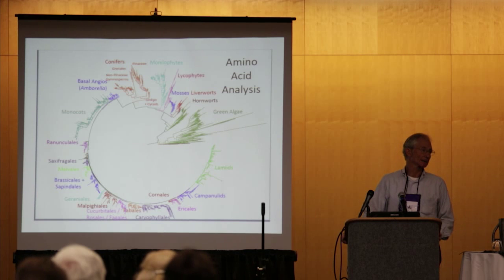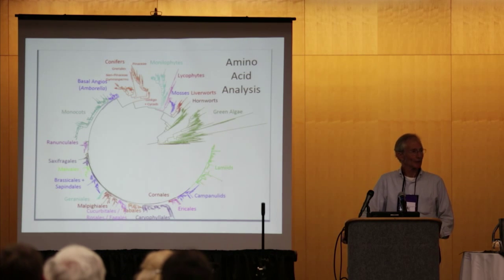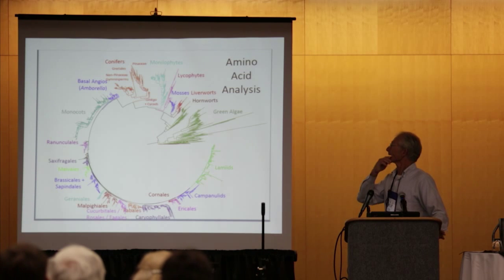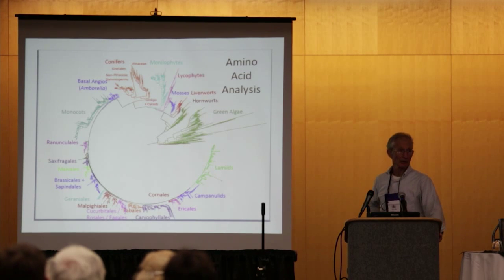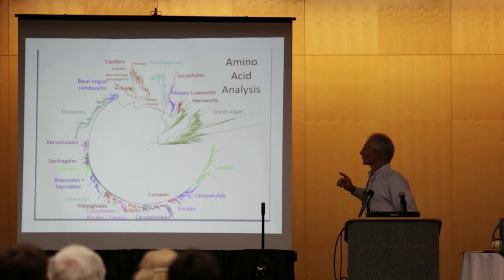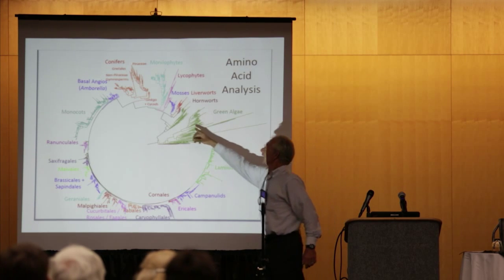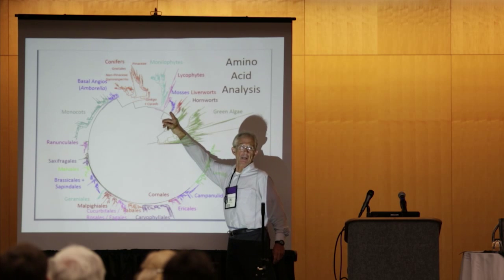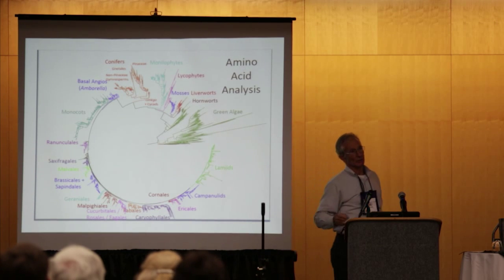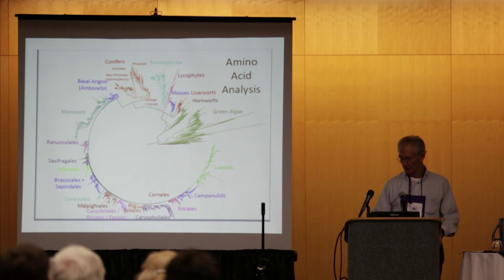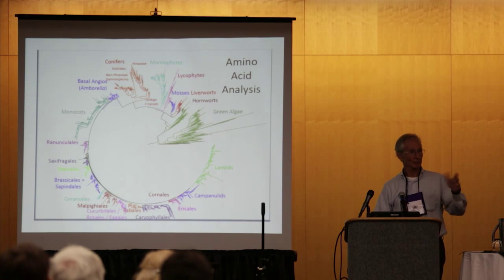We do have an amino acid analysis underway — bootstrap values are not yet available. It's very similar to the all-nucleotide dataset, but one interesting difference is that we are recovering monophyletic bryophytes. This is similar to what was shown with the nuclear nucleotide data using coalescent-based analysis. So there's some variation based on method of analysis.